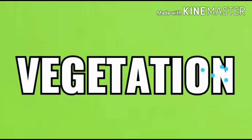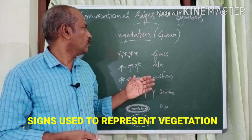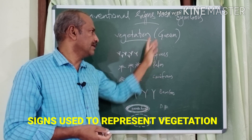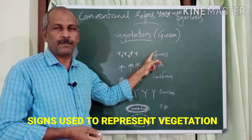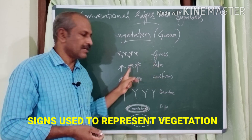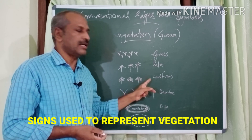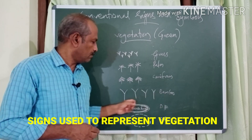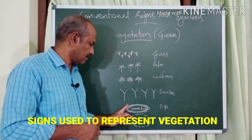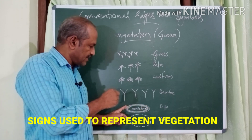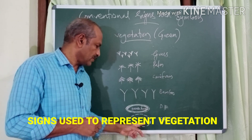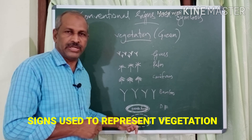Now let's see how vegetations are represented in the topographic map. All vegetation symbols use green color. The symbols shown are: grass, palm, coniferous tree (tree with a conical shape), bamboo, dense forest (represented by a thick green oval shape with 'dense forest' written inside), and reserved forest (shown by a broken elliptical outline).